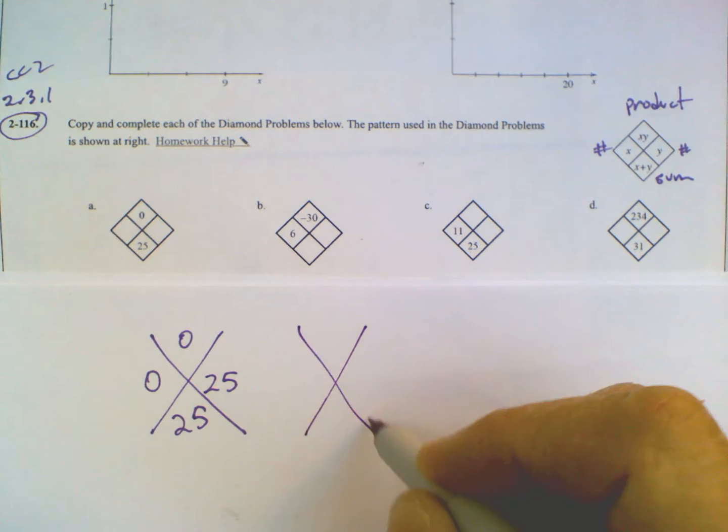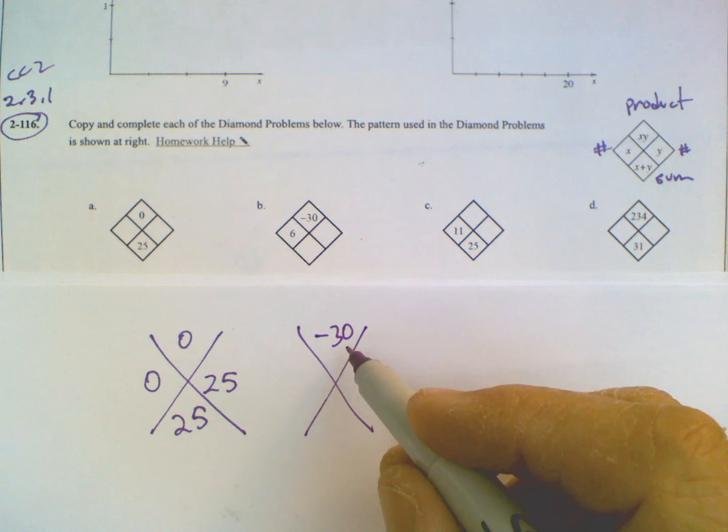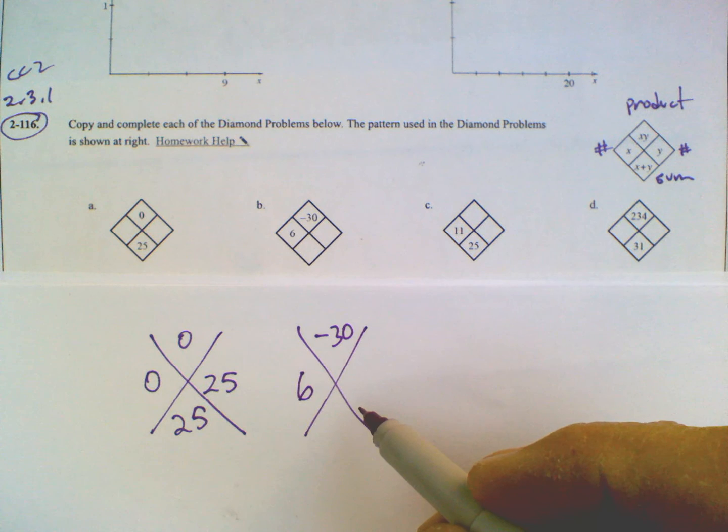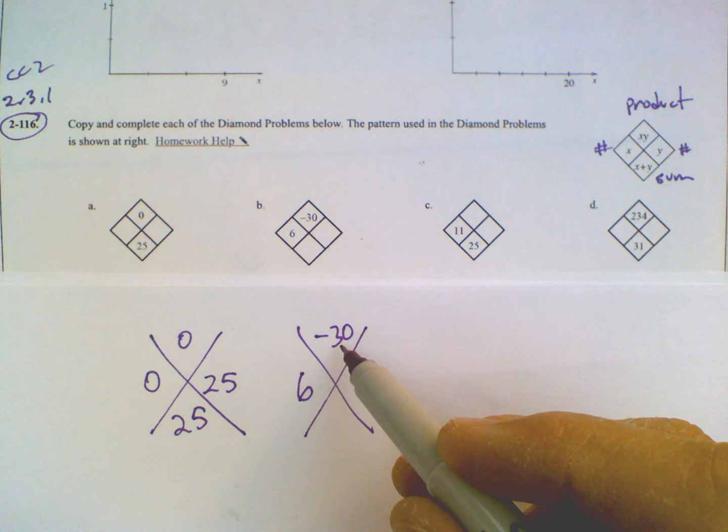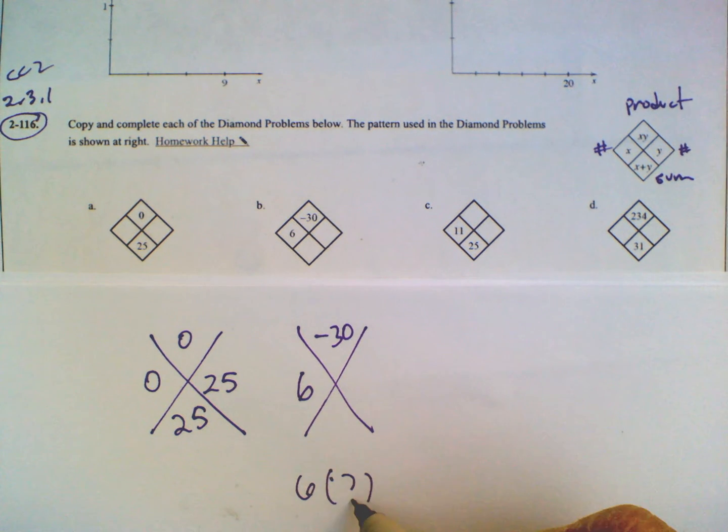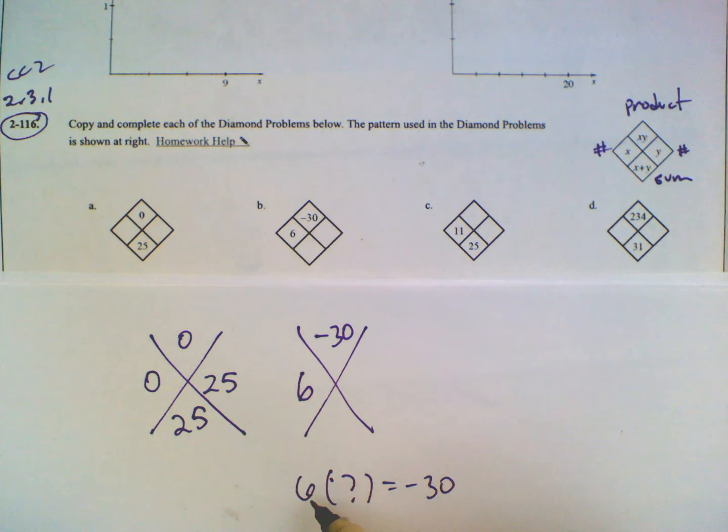B, I have a product of negative 30, and one of the numbers is 6. So 6 times something is negative 30. So 6 times something is equal to negative 30. I have a product to be negative 30. So what does that have to be?